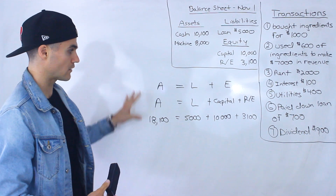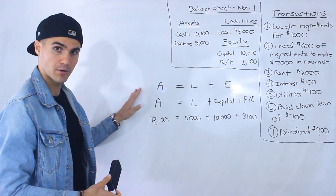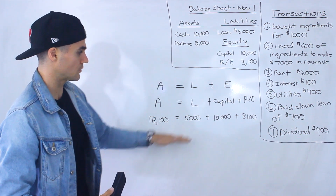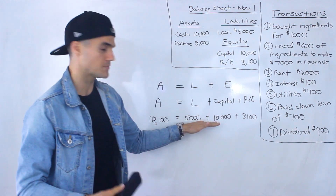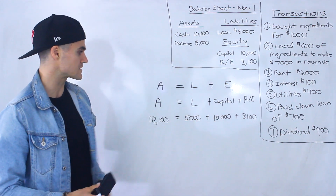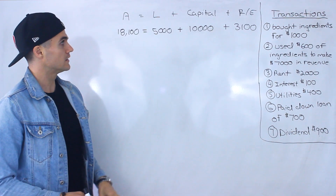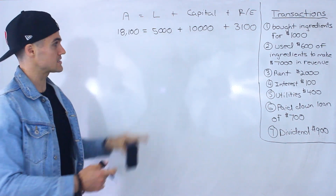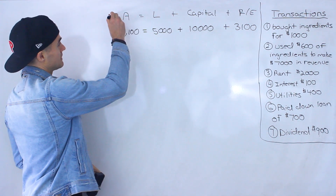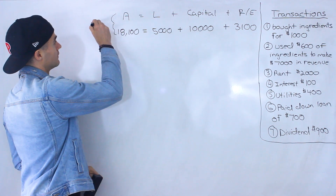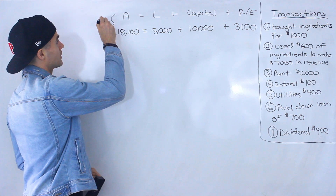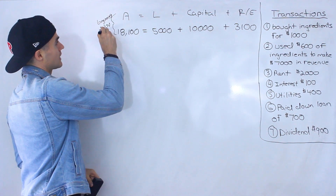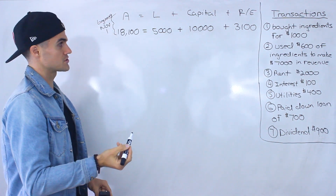I want to make a note that whatever equations I put up on the board, they're always going to balance on the left and right side. This here represents the balance sheet equation, and it's going to be at the beginning of the period — in this case, November 1st.